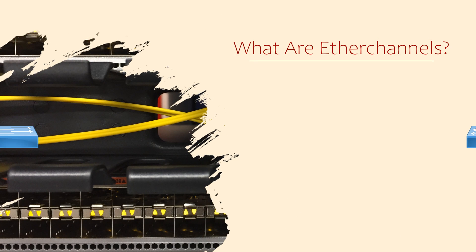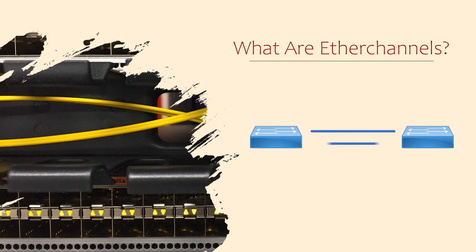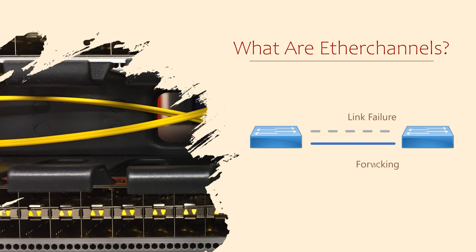We've recently been talking about Spanning Tree. What would Spanning Tree do in a case like this? It would effectively block one link to prevent the loop. But we still need to consider having two links here for redundancy — if one link fails, the other would be available to take over. The second link is basically a backup in case the first link fails. This is good, but it could be better.